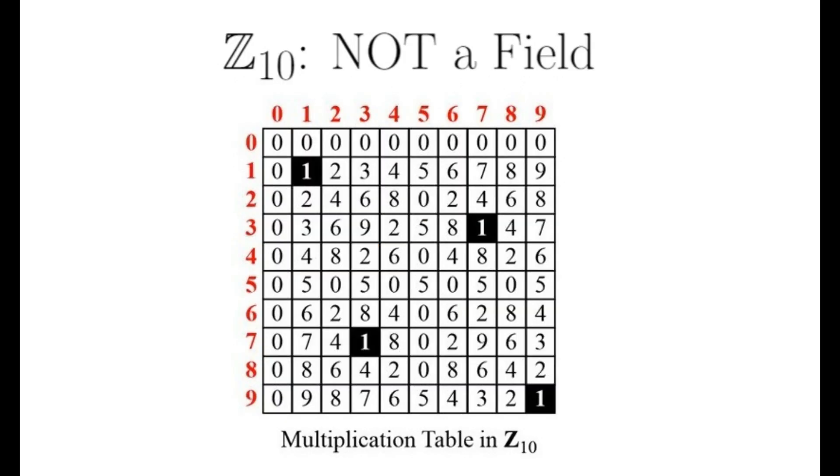This is the multiplication table for Z10. Notice that there are no ones in the rows belonging to integers that share common factors with 10. In other words, there are only multiplicative inverses for the numbers that are relatively prime to 10. This is true for any choice we make. Therefore, for Zn to be a field, n must not have any factors in common with the numbers between 0 and n minus 1. This means that n must be a prime number.